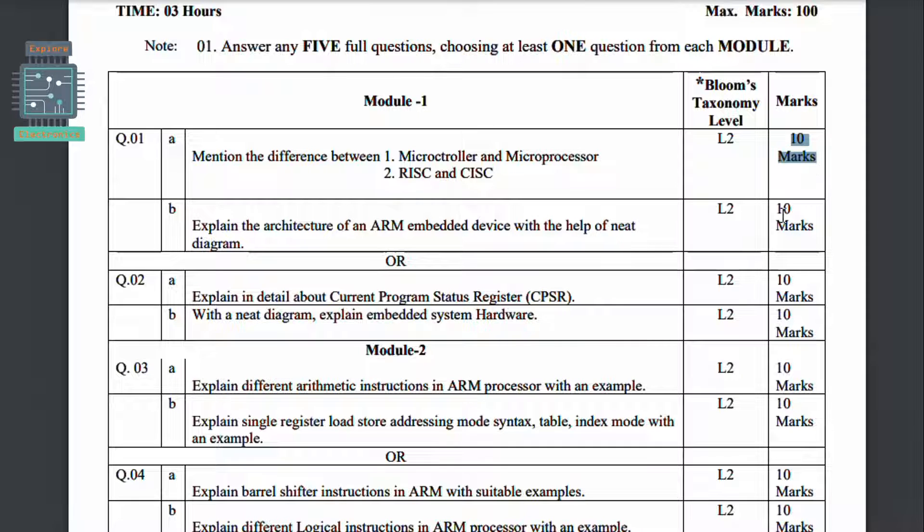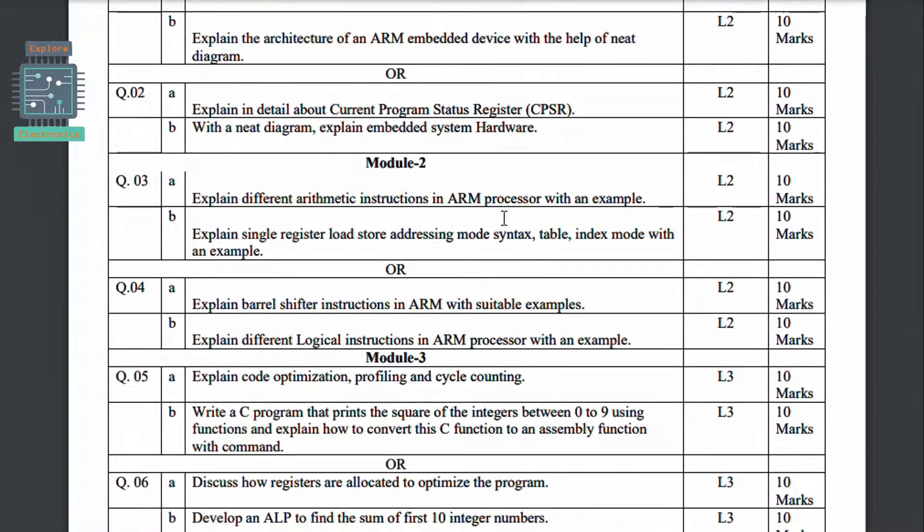And here they have given for 10 marks. In exam you may get questions like 5 marks, 8 marks questions also. Coming to Module 2, explain different arithmetic instructions of ARM processor with an example. So coming to instruction sets you can expect one question easily from instruction sets. They may ask to write the instruction set with example generally or they may ask in particular instructions also.